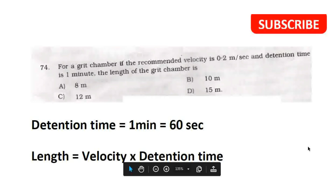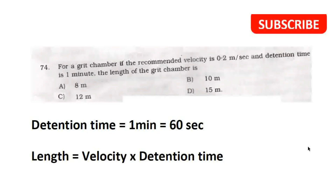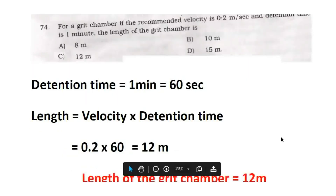Next question: for a grit chamber, if the recommended velocity is 0.2 metres per second and detention time is 1 minute (60 seconds), the length of the grit chamber equals velocity × detention time = 0.2 × 60 = 12 metres.